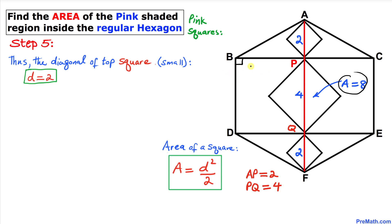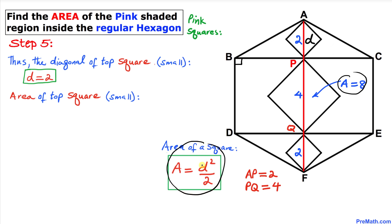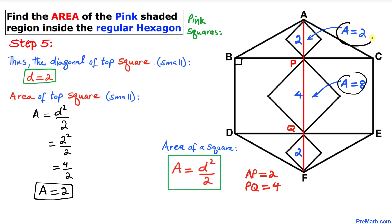Now let's focus on the smaller square on top. Line segment AP is the diagonal of this square, so D equals 2. Using the area formula A equals D squared divided by 2: that's 2 squared divided by 2, which is 4 over 2. So the area of the top square is 2 square units.